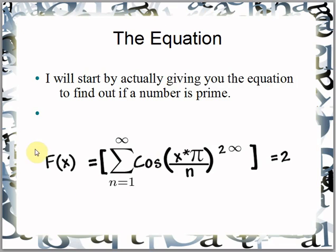First of all, this is the equation. F of x equals the sum of this cosine, and when this sum is equal to 2, that means the number is prime. So if I plug in 1, 2, 3, a thousand, a million, a gazillion plus 1 — once I plug any number into this equation, if its result is 2, it's a prime number, guaranteed.